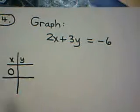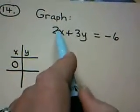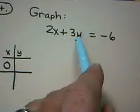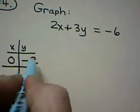Put a 0 in for x. If I put a 0 in for x, 2 times 0 is gone. Basically, it's 0. 3 times y is negative 6. Divide by 3, so y would be negative 2.